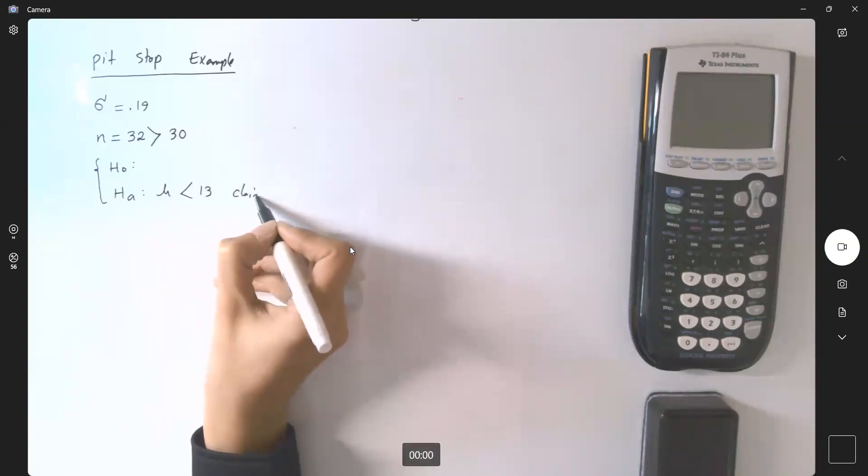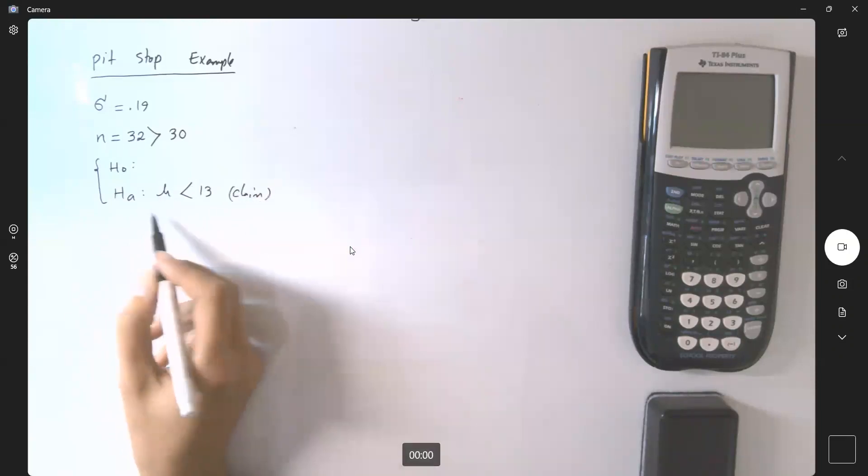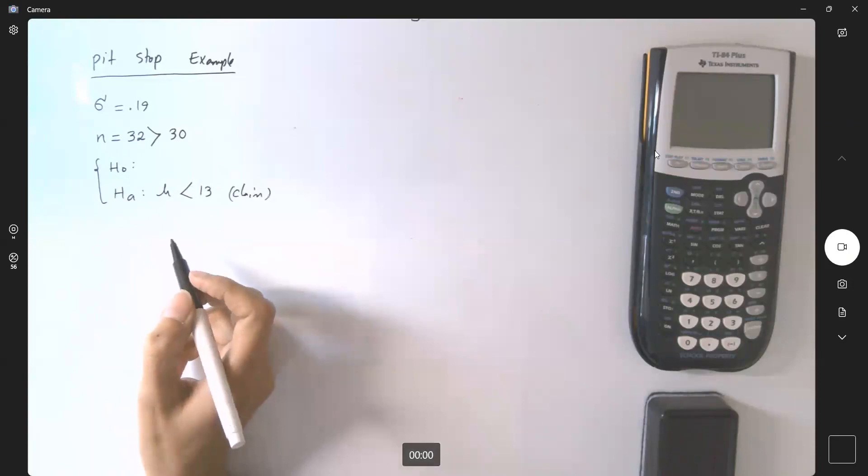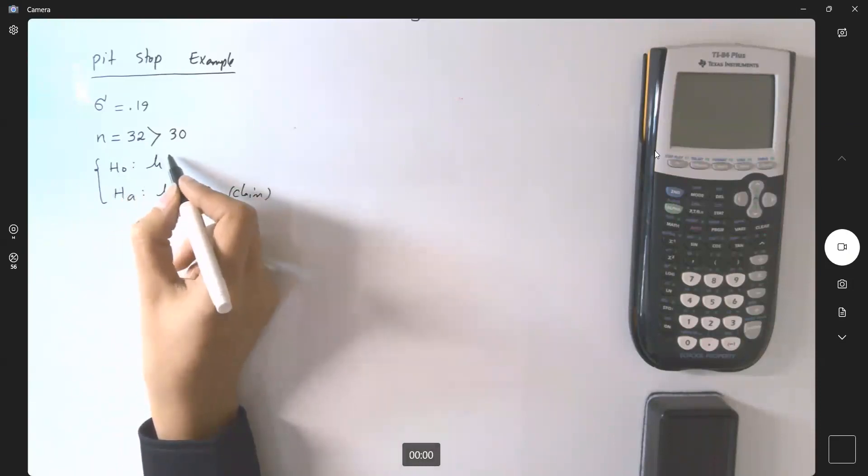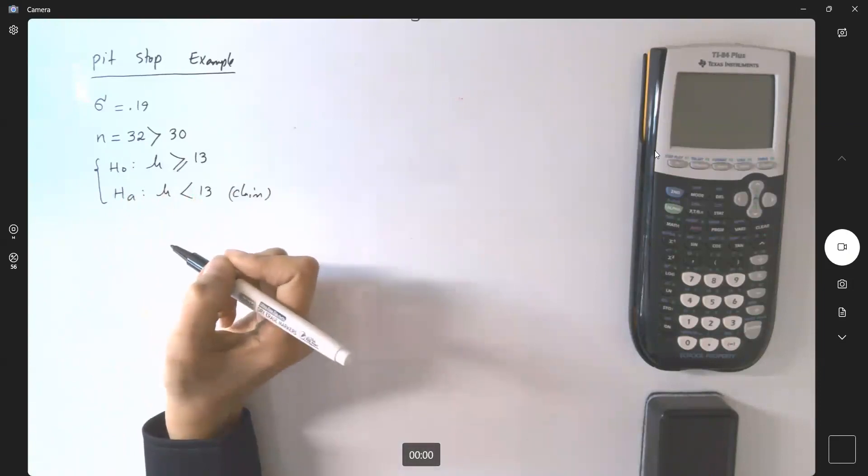Since we have the alternative hypothesis, we can easily construct the null hypothesis. Mu or the population average time is larger than or equal to 13 seconds.